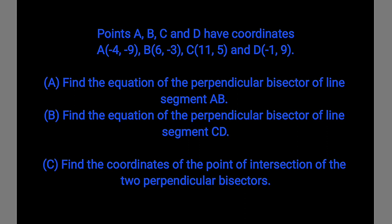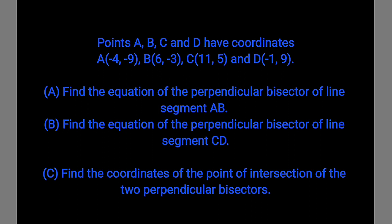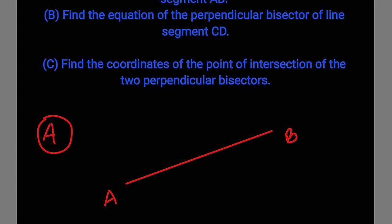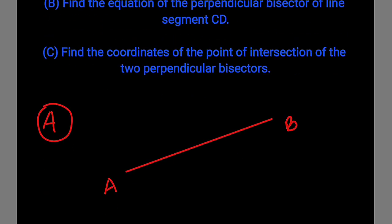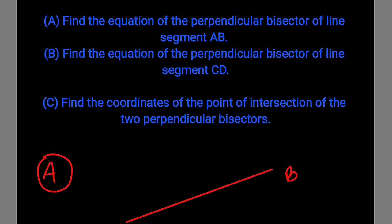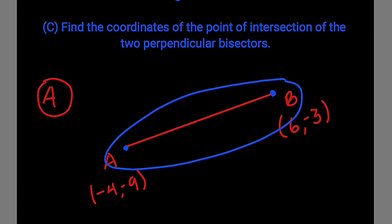Let's start with the first one, which is A. We want to find the equation of the perpendicular bisector of line segment AB. So now let us draw a straight line AB. We have A at negative 4, negative 9 and B at 6, negative 3. From the question, we are asked to find the equation of the line which is the perpendicular bisector of AB.